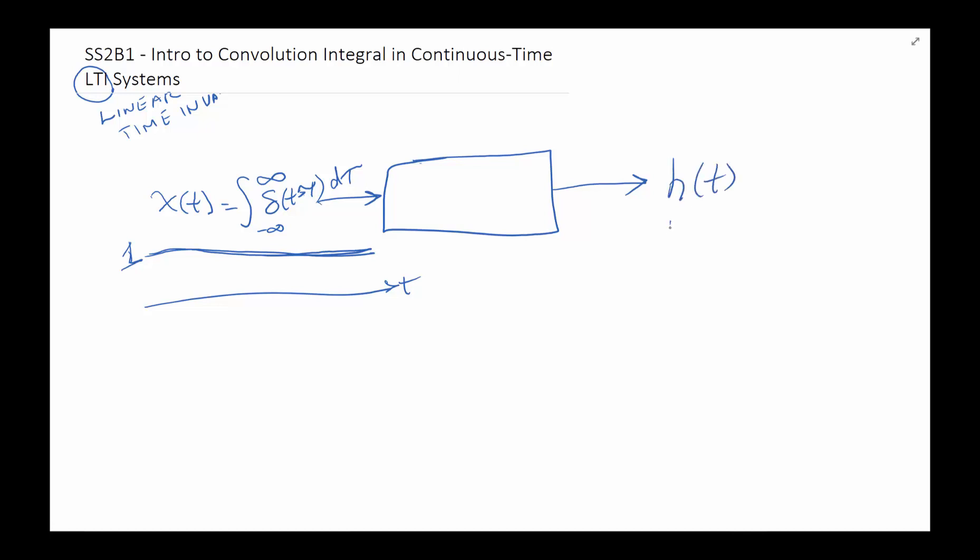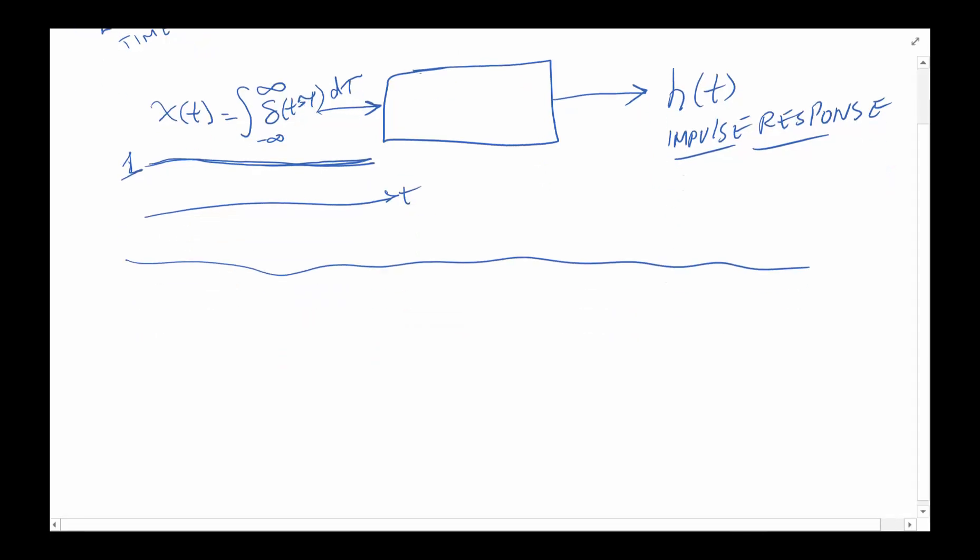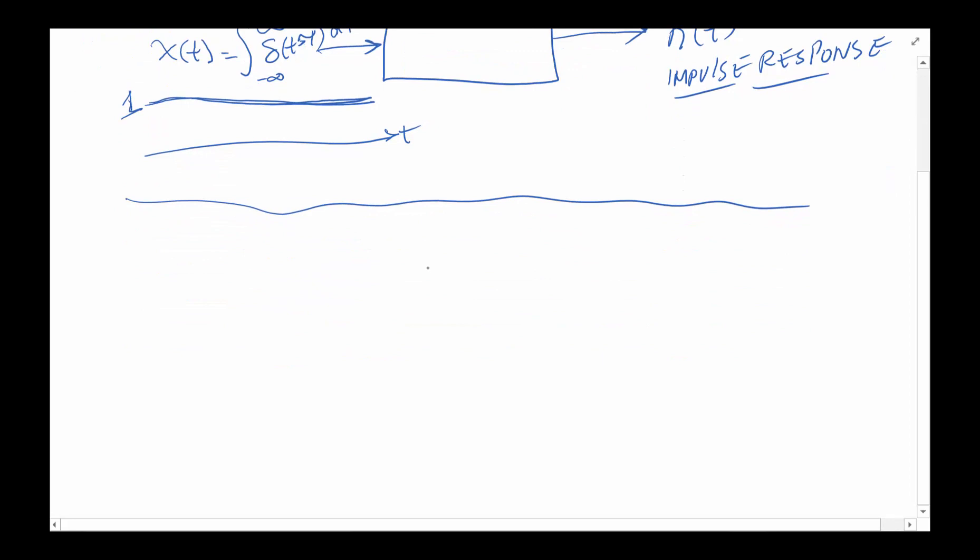That shaping function is referred to as H(t), and as we said before, it's called the impulse response. We are able to find the impulse response of any linear time invariant system by simply sending a bunch of impulse functions from minus infinity to infinity through it and figuring out what the output function is.